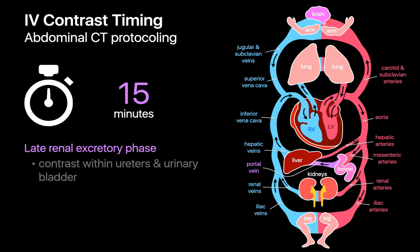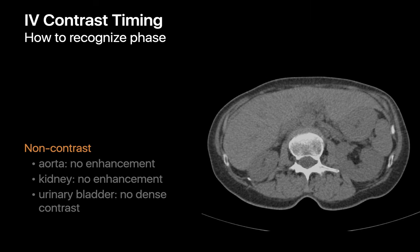If you're looking at CT images of the abdomen, the phase of enhancement may not always be clearly labeled, so you should be able to recognize the phase your images are in. It's always important to know what phase the images you're looking at were acquired because certain pathologic imaging findings are more likely to be masked on some phases and more likely to stand out in other phases. If there's no enhancement within the aorta, no enhancement within the kidneys, and no dense contrast within the urinary bladder, you're looking at a non-contrast scan.